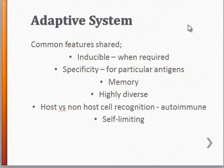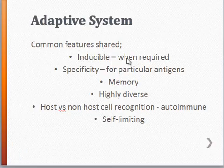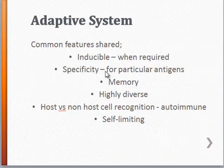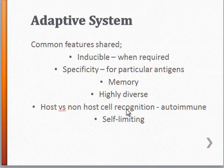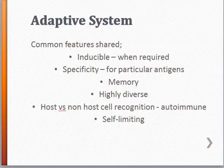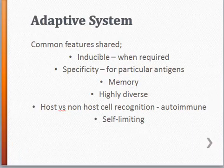What are some features of the adaptive immune system? Well, it's inducible — switched on when required, becoming activated when we need it. It's also specific, having a very specific response for particular antigens. It has memory — so the first time it's exposed to an antigen, it'll respond to a subsequent infection much more effectively by recognizing the antigen. It's also highly diverse and has host versus non-host cell recognition — and when this fails, you get autoimmune diseases such as SLE. It's also self-limiting, returning to a basal state after an infection has been defeated.